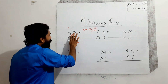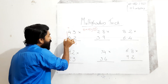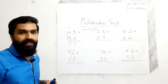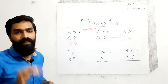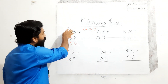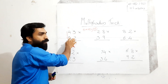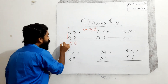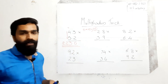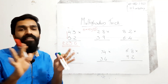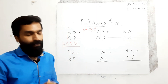Next step: multiply the tens places — 4 and 5. 4 into 5 is equal to 20, and there is one remaining carry of 2, so 20 plus 2 is equal to 22. Write that here. So the answer is 2236. This is the shortcut method to find the product of any two-digit numbers.